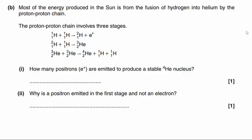Part B is a tricky question here. Most of the energy produced in the sun is from the fusion of hydrogen into helium by the proton-proton chain. Don't worry if you don't know this in any detail, it gives it to you here. The proton-proton chain involves three stages. Part i says, how many positrons? It tells us here that a positron has the symbol E plus, so don't worry if you don't know what a positron is. How many positrons are emitted to produce a stable helium-4 nucleus?